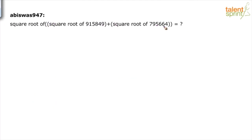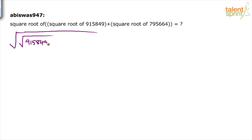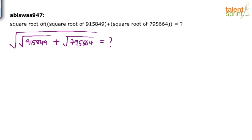The next problem: find the square root of 915849 plus the square root of 795664. If options were given, you could use the units digit method and mark the answer directly, or use the digital root method or approximations to eliminate three or four options.